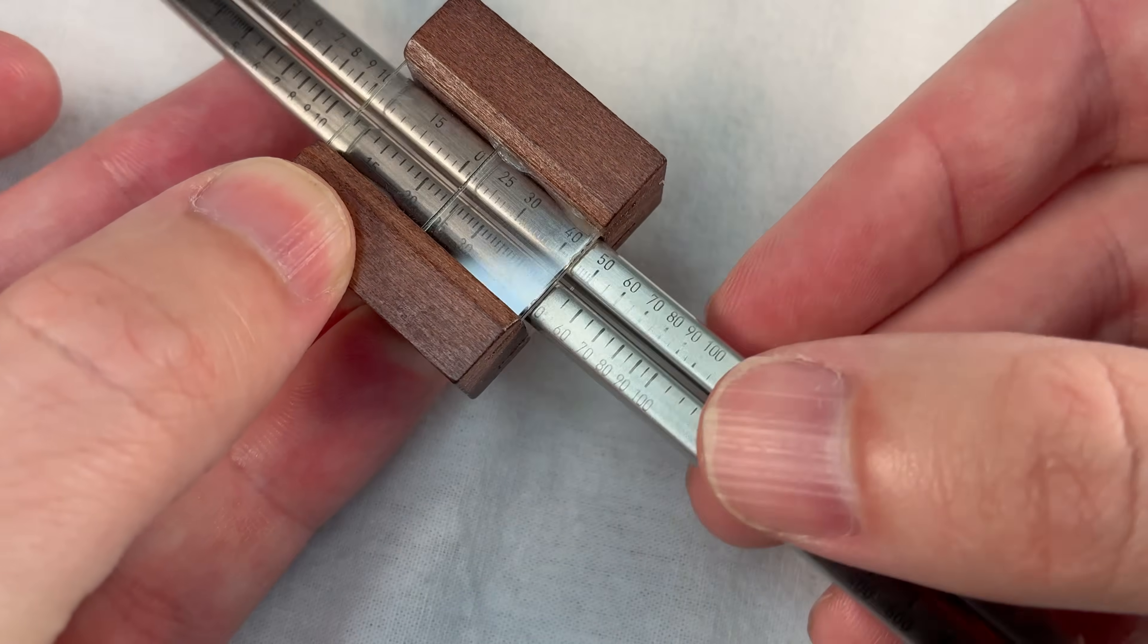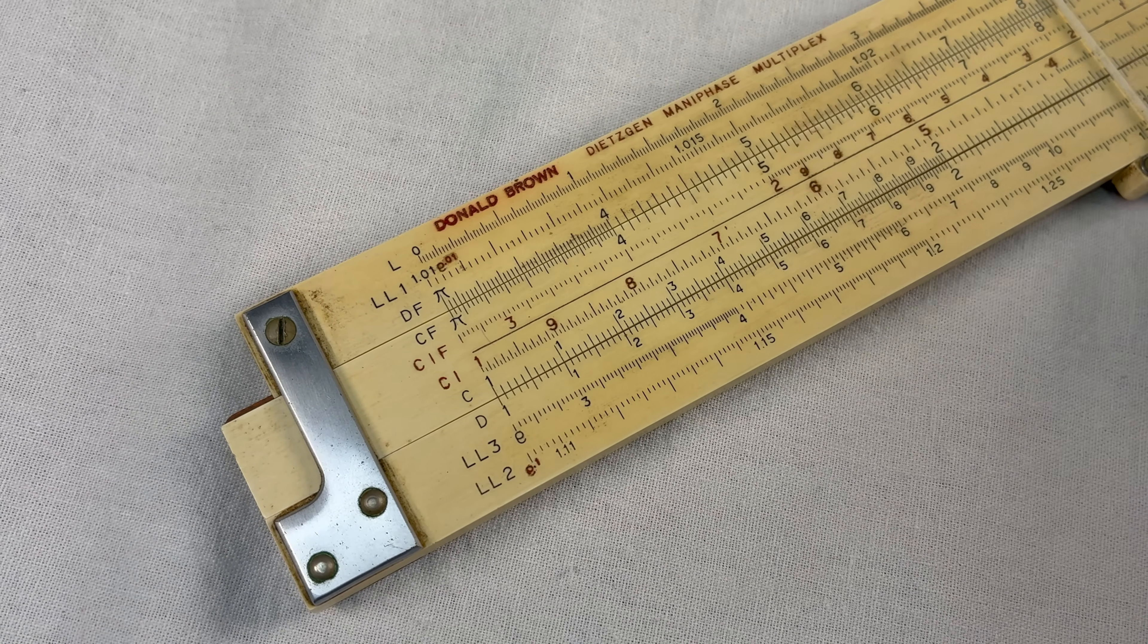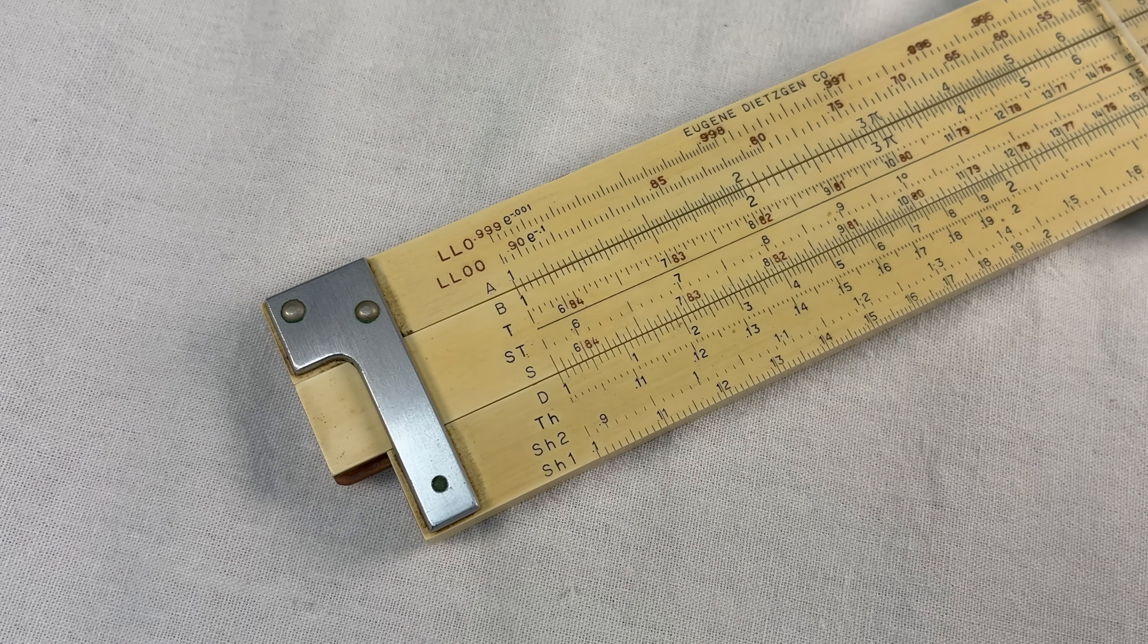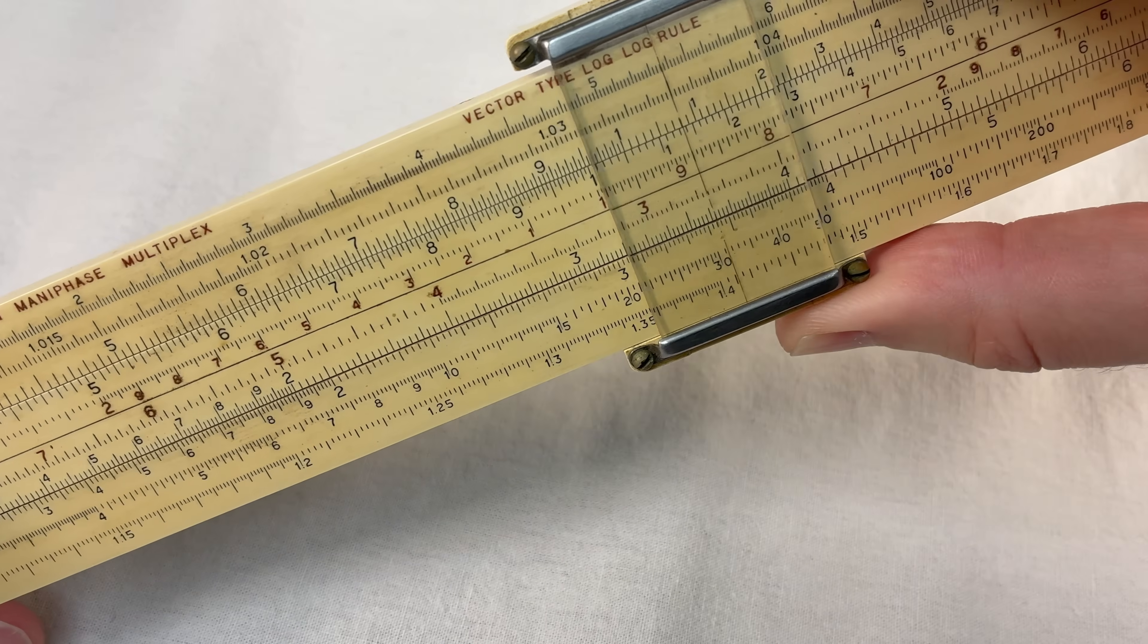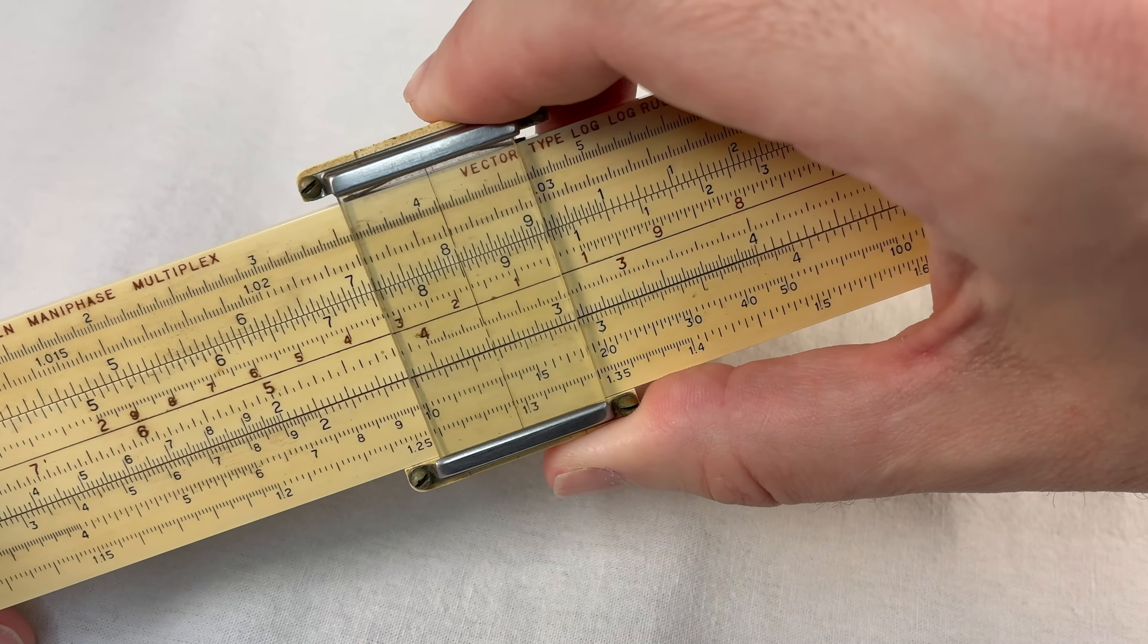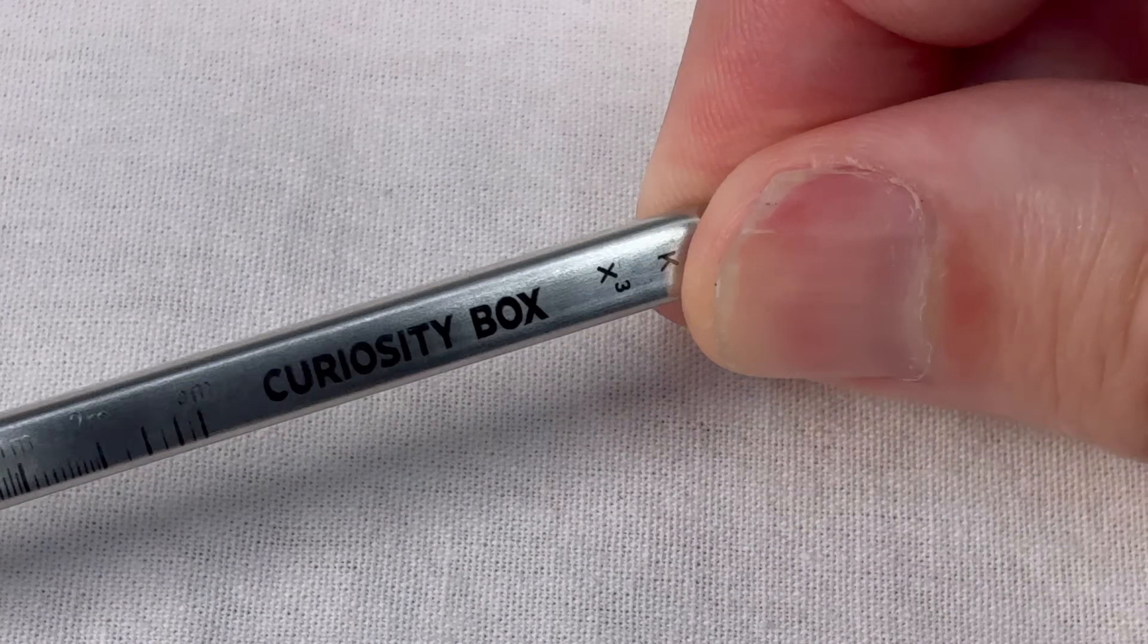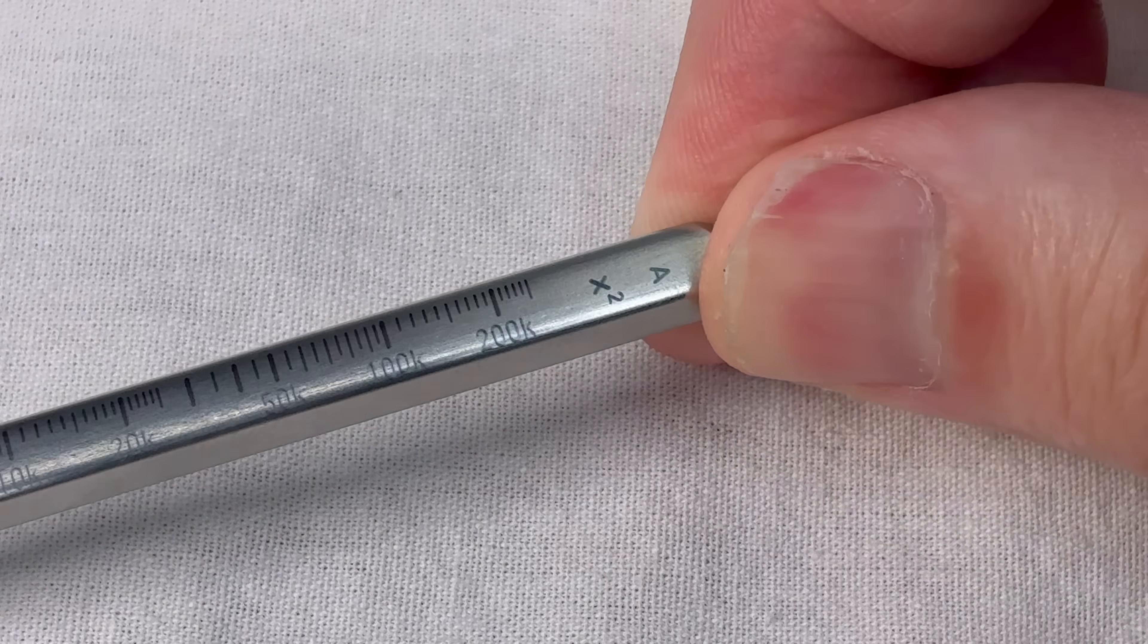A real engineering slide rule has several different scales for doing different types of stuff: logarithms, exponents, trig functions, all the stuff an engineer would typically want to do. There's 20 different scales on this thing, on the front and the back. And the slide rule chopsticks have scales on the back too. The C scale has a K on the back and the D scale has an A on the back.